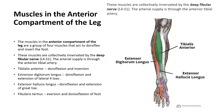Muscles in the leg are divided into three compartments: the anterior compartment, the lateral compartment, and the posterior compartment. Now we are going to learn the anterior compartment leg muscles. There are four muscles in total: tibialis anterior, extensor hallucis longus, extensor digitorum longus.